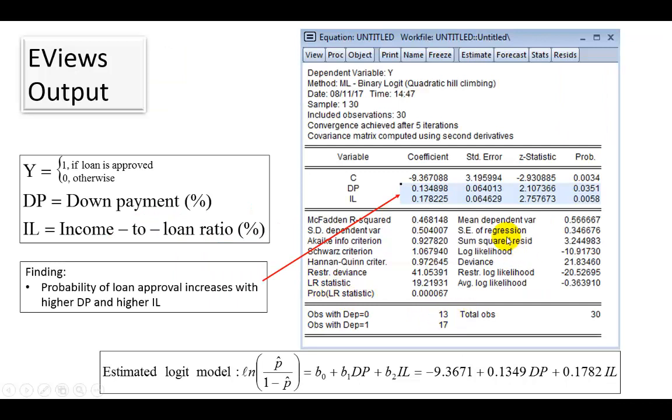In the previous presentation, I used eViews to obtain results of a logistic model in which we estimated the likelihood of loan approval, given the applicant's down payment and income-to-loan ratio. Now, because both of these coefficients are positive, as we see here, and for good measure, statistically significant based on their p-values, they tell us that the probability of loan approval increases with higher down payment and higher income-to-loan ratio.